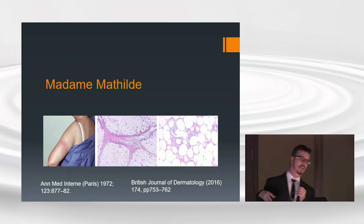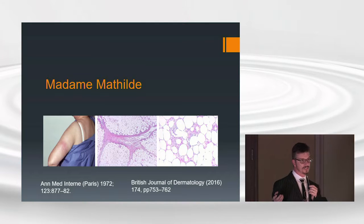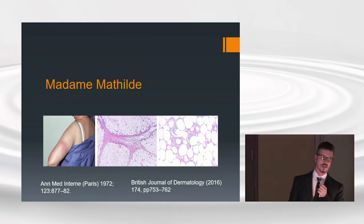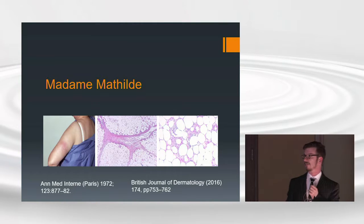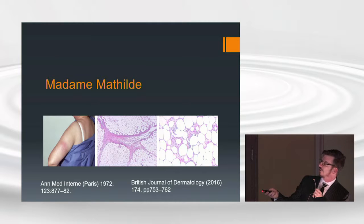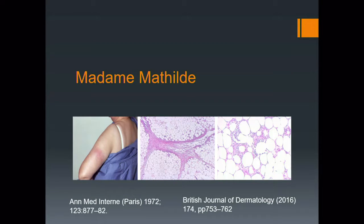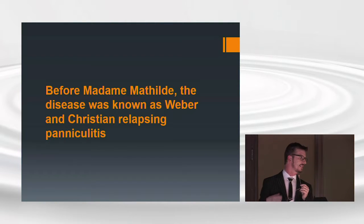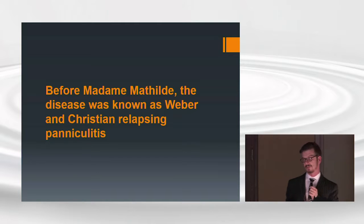The first case of paniculitis with identification of alpha-1 antitrypsin deficiency was a French patient named Madame Mathilde, published in the Annals of Internal Medicine in France in 1972. On the microscopy, you can see the fat cells are broken up — those are inflammatory cells in the fat. Normally fat cells are intact with no inflammatory cells in between. Before Madame Mathilde, the condition was called Weber-Christian relapsing polypaniculitis; since 1972 it has been identified and associated with this enzyme deficiency.